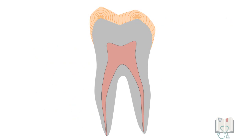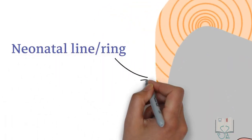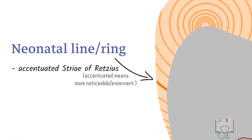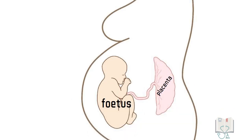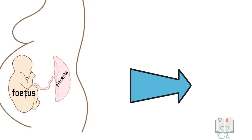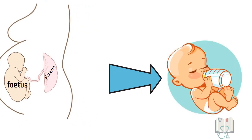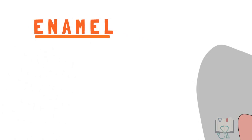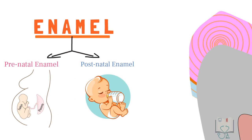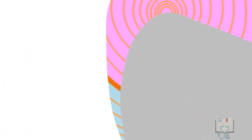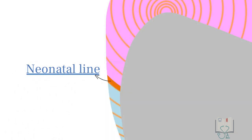Neonatal line: in a section of enamel where striae of Retzius are visible, the neonatal line is just an accentuated striae of Retzius — that is, it represents a variation in enamel deposition. In this case, the alteration is due to the birth of the child. A fetus which gets its nutrition through the placenta transitioning to a newborn which gets nutrition from the mouth brings about an abrupt change in nutrition. This line divides the enamel developmentally into two parts: prenatal enamel, formed during fetal stages, and postnatal enamel, formed after the child is born. The junction between these two is clearly depicted by the neonatal line. The prenatal enamel is usually better developed than postnatal enamel.